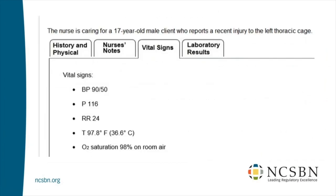Vital signs: BP 90 over 50, pulse 116, respirations 24, temperature 97.8 Fahrenheit (36.6 for our Canadian friends), and oxygen saturation 98% on room air.